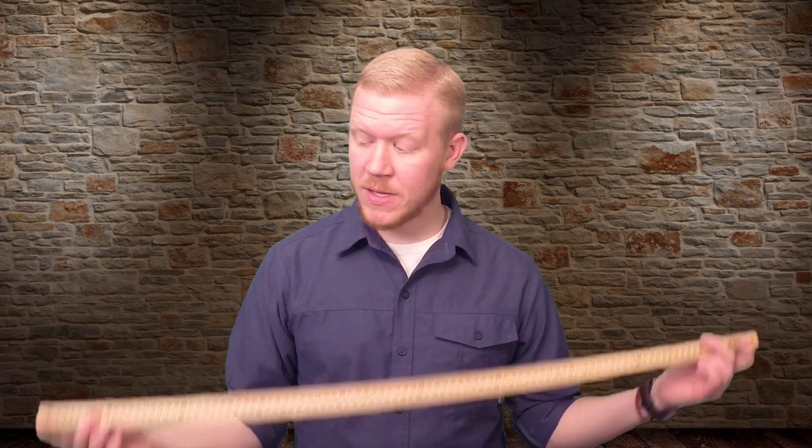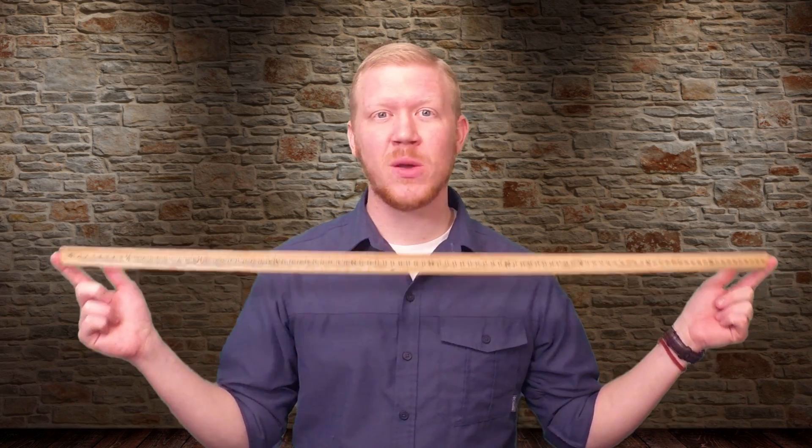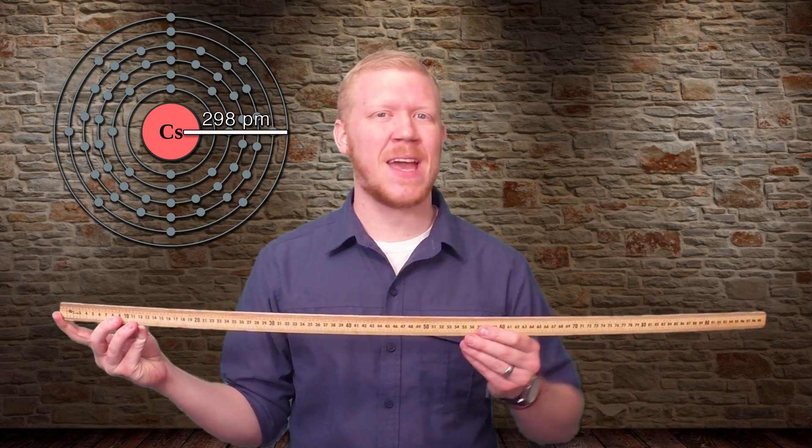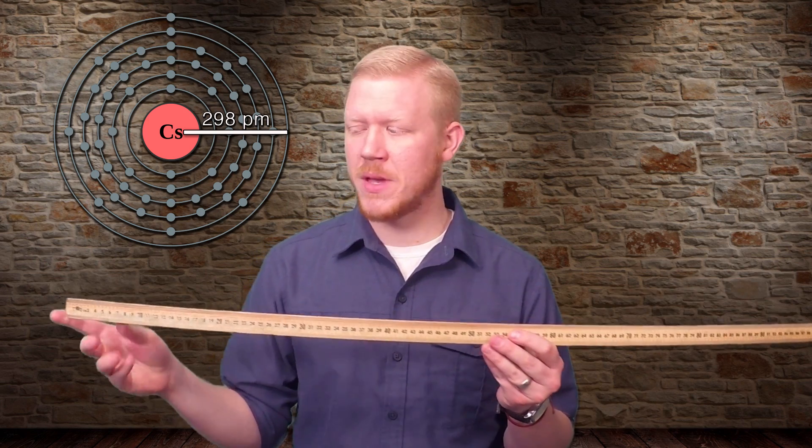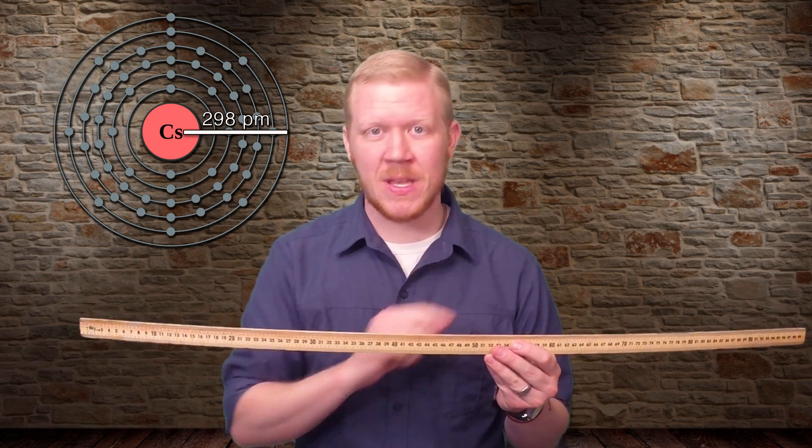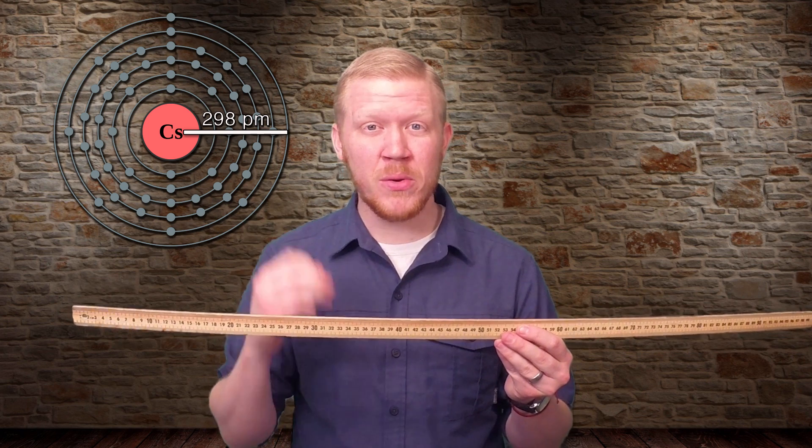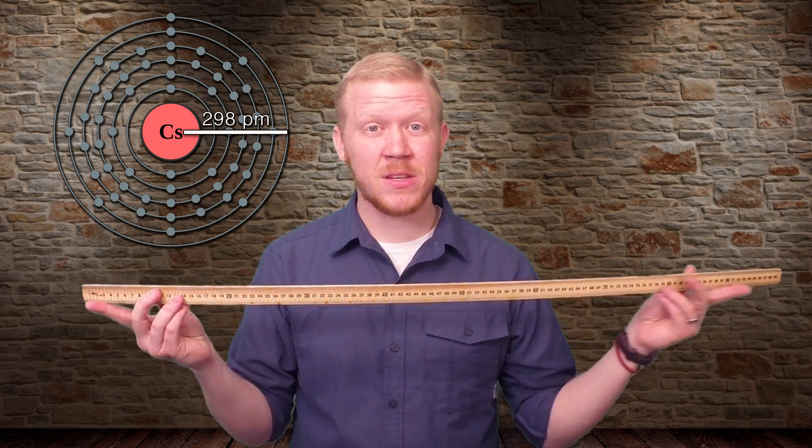Another way to say that is that there are a trillion picometers in one meter. So if we were to take the largest element, which is cesium, with an atomic radius calculated to be 298 picometers, and line its atoms up side by side along a meter stick, more than 1.5 billion would span from one end to the other.